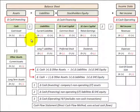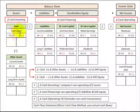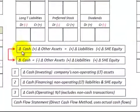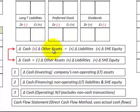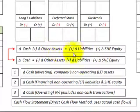Here we're going to be using the direct cash flow method to determine our cash flow statement. This is where we use the actual cash flows through our cash account. We're going to be using this equation where assets equal liabilities plus stockholders' equity. I've broken assets apart between the cash asset and all other assets. The change in cash equals minus the change in all the other assets, plus the change in liabilities, plus the change in stockholders' equity.